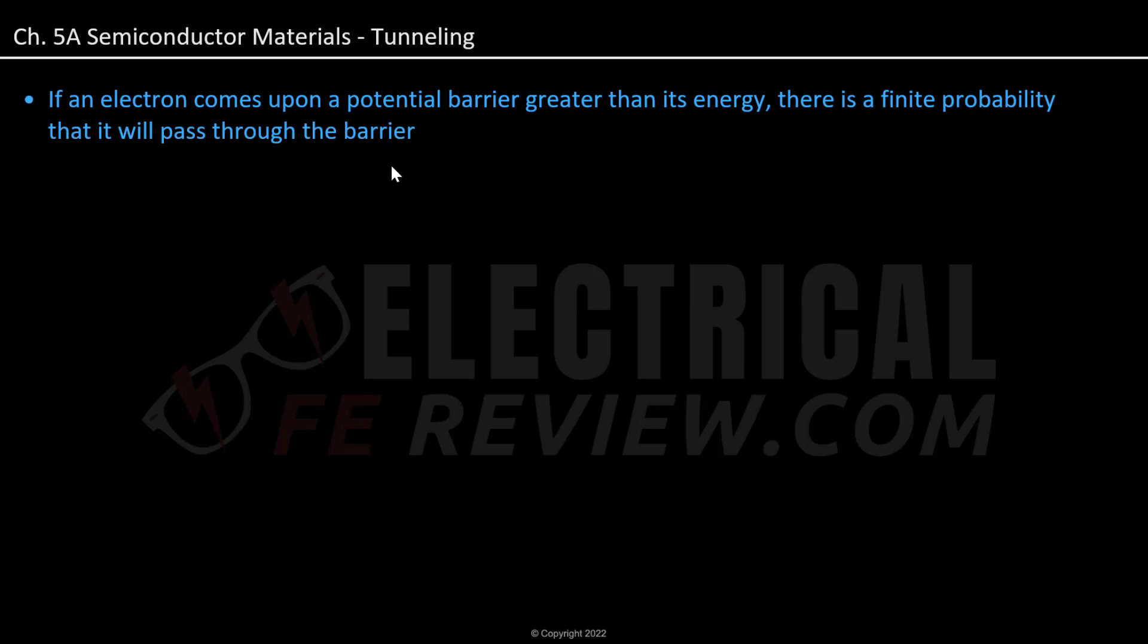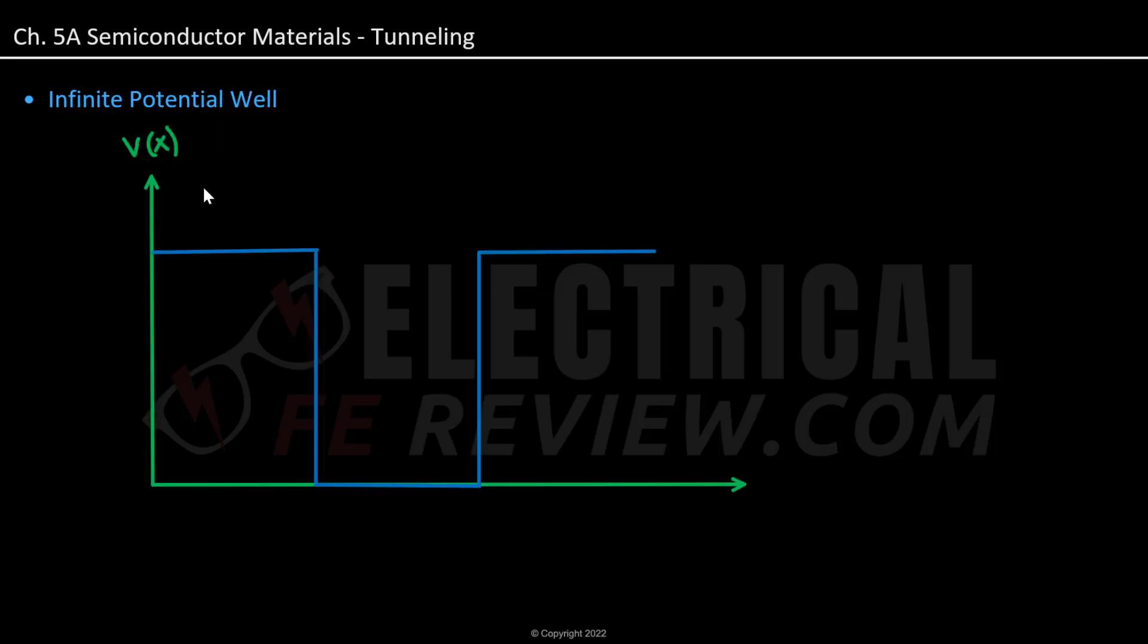Let's go ahead and further dissect what this means. We can visually look at what tunneling means in an infinite potential well, where we have our area 1, where our energy is infinity, and we have area 2, where our energy is equal to zero since it is on the x-axis, and we have area 3, where its energy is also equal to infinity.